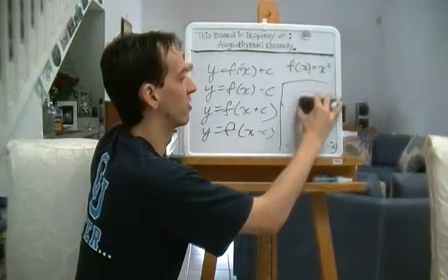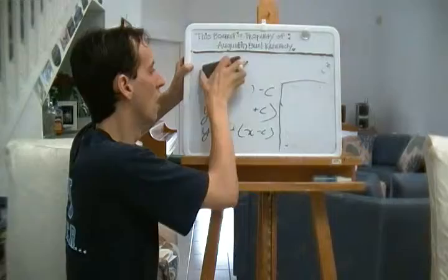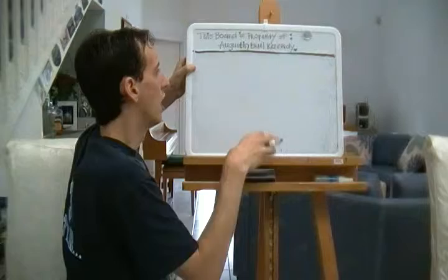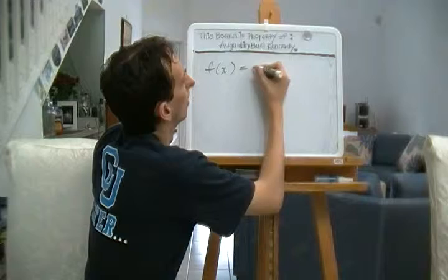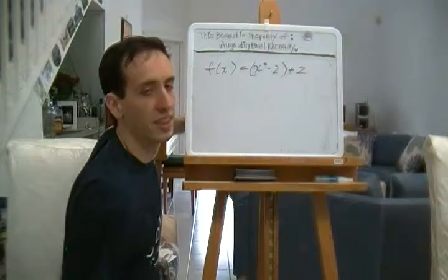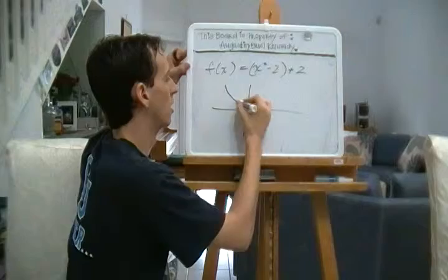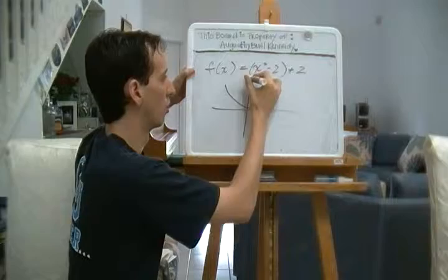And if we have F of X squared minus 2, then we are going to shift to the right. And to put it all together here, if we have F of X equals X squared minus 2 plus 2, you might assume, and correctly, that we're going to take the parabola X squared, move it to the right 2, and shift it up 2.